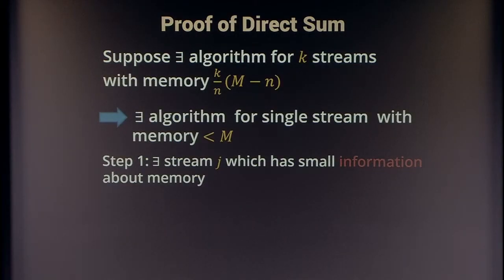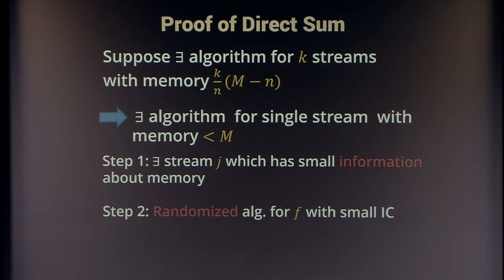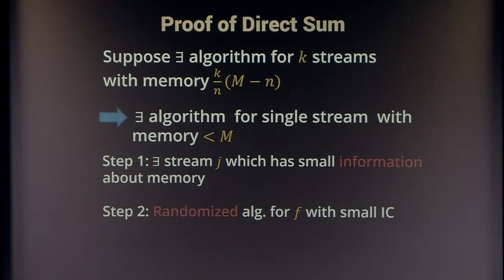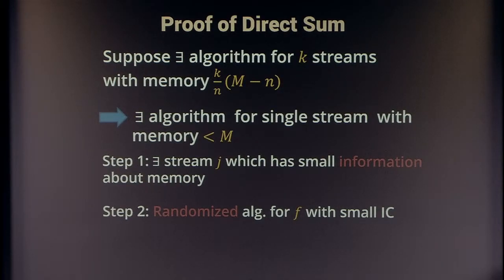Just by super-additivity, the mutual information between memory at time t and the t-th element of all k streams is at least the sum of mutual informations for each stream individually. By averaging, there is some stream j for which the algorithm learns very little information conditioned on what it already knows — bounded by the information content divided by k, which is at most the memory divided by k.